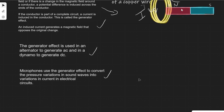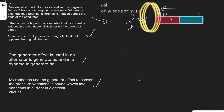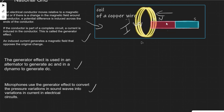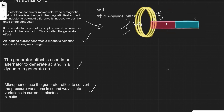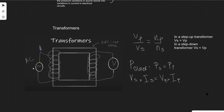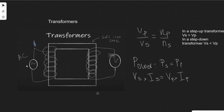For the higher tier, microphones also use the generator effect to convert pressure variations and sounds into electrical signals — variations in current. Speaking into a microphone causes a small magnet inside to move slightly, generating a small current which can then be converted to a digital signal.